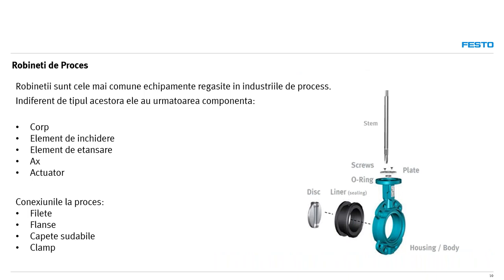Haideți să discutăm un pic și despre robineții de proces. Sunt cele mai comune echipamente de acționare întâlnite în industriile de proces. Din punct de vedere al componenței lor, de obicei sunt compuse dintr-un corp, un element de închidere, un element de etanșare, axul și actuatorul. Axul transmite mișcarea venită de la actuator către elementul de închidere.